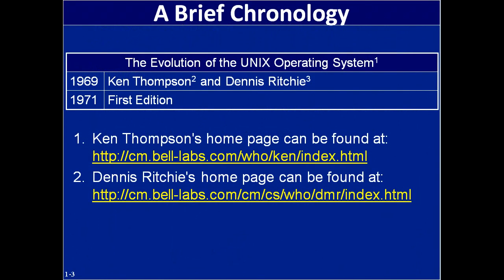The two people that developed Unix were Ken Thompson and Dennis Ritchie, as you see here. They worked for AT&T, or Southwestern Bell Labs, at the time in the late 60s. Ultimately, while they were running programs and waiting, they were looking for some way to pass the time, so they developed this little application — which turned out to be Unix — that would allow them to play video games while they were waiting for their programs to run.